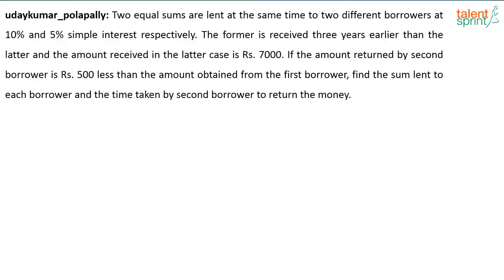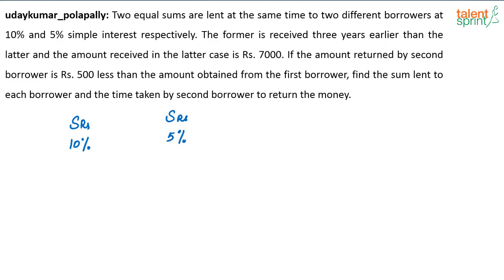The next question is posted by Uday. It's a question on simple interest. For such questions, if they actually give the options, it would be far easier to arrive at the answer. What is given here? Two equal sums are lent at the same time to two different borrowers at 10% and 5% simple interest respectively. I am giving S rupees to the first borrower and S rupees to the second person — the first at 10% simple interest and the second at 5% simple interest.